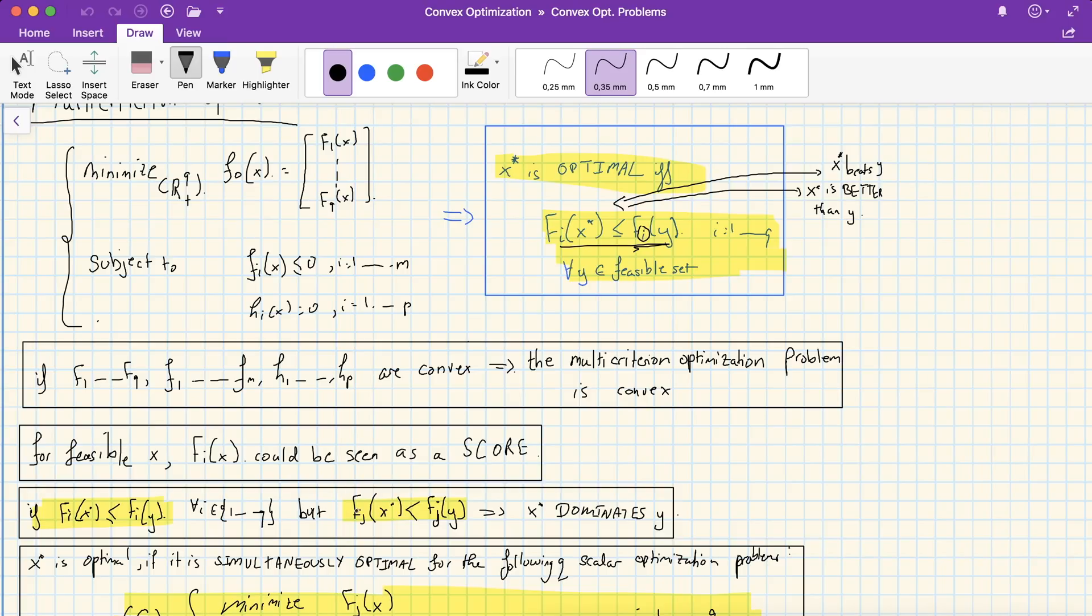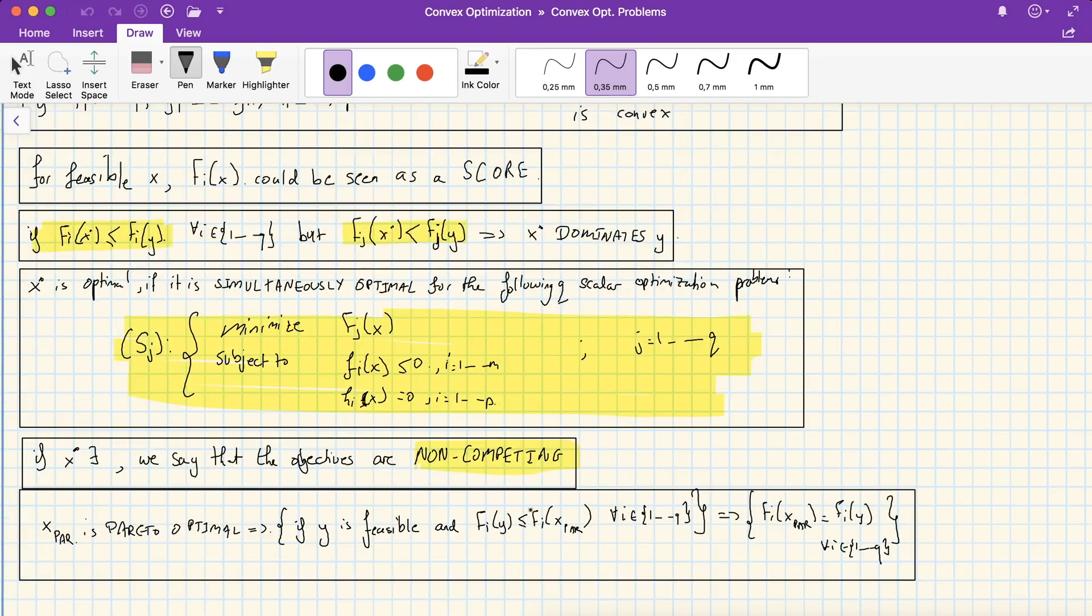We said that if we find a cost where x star beats y, then we say that x star dominates y. We gave another interpretation of an optimal point that is x star should simultaneously be optimal for the separate scalar optimization problems.